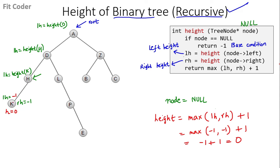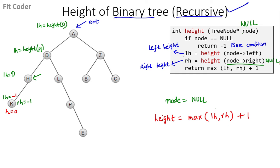Back at H, we have calculated the left height as 0 (height of K). Now we calculate the right height for H by calling height with H's right child, which is null — returning -1. The height of H is max(0, -1) + 1 = 1. So the height of node H is 1.